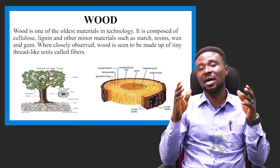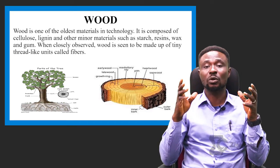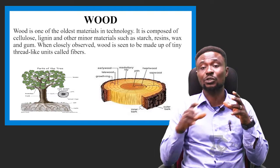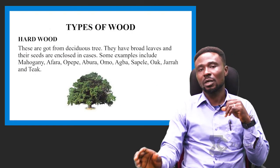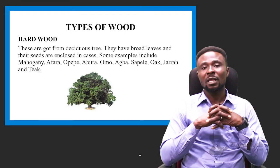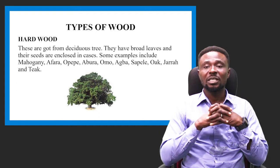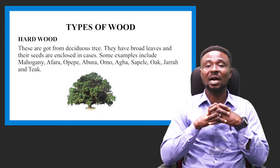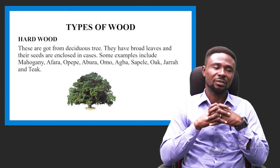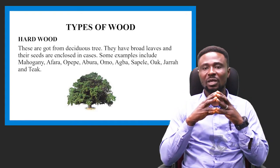You can also see the parts of a tree. The green part that people know as leaves can also be called the crown. You have the trunk and the roots, where they obtain their minerals and salts. We have two types of wood: hardwood and softwood. Hardwood trees have broad leaves and their seeds are enclosed in a case. Some examples include Mahogany, Afara, Opepe, Abura, Omu, and Teak.